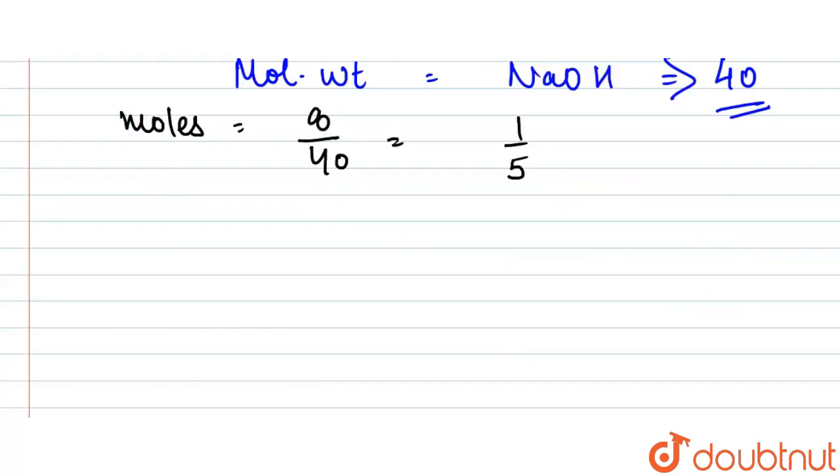So, our molarity will be equal to the number of moles, which is 1 upon 5, divided by the volume, which is 1. So, it is 1 upon 5.